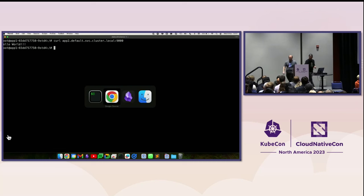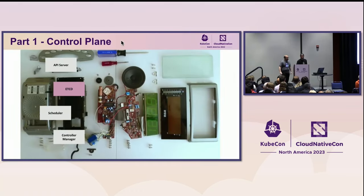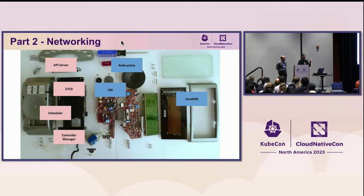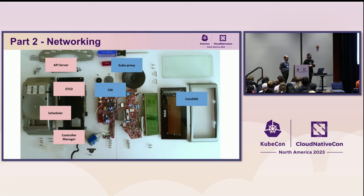Back to the slides. Part one was the control plane, part two is the networking. Right now we fixed: first the CNI because we were not routing. You saw that if we do not have the CNI, we do not have network connectivity - that's safer, networkless. Then kube-proxy, and now CoreDNS. Off to the bonus because we have time - five minutes.